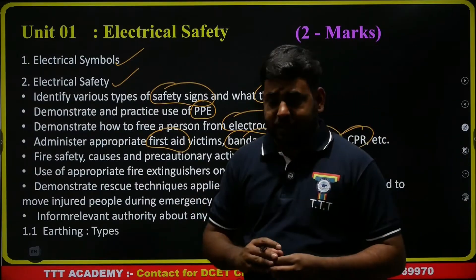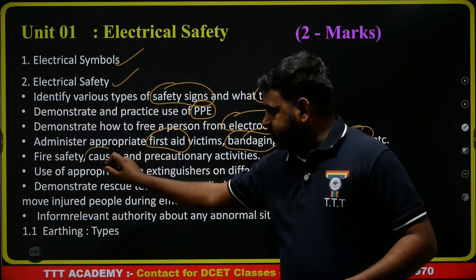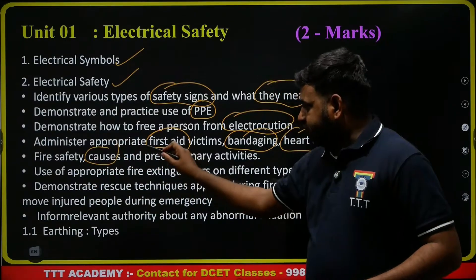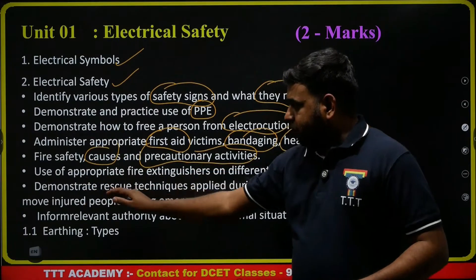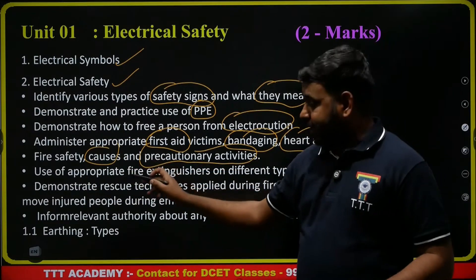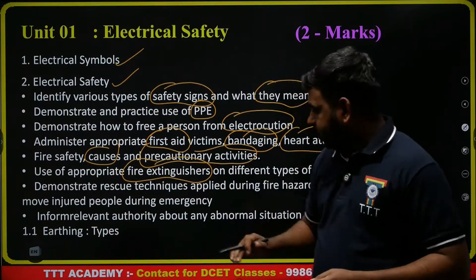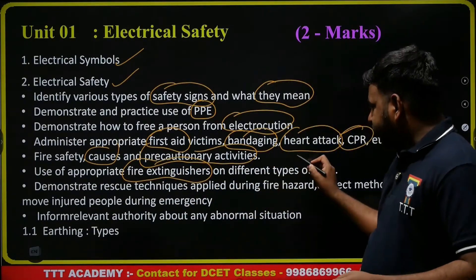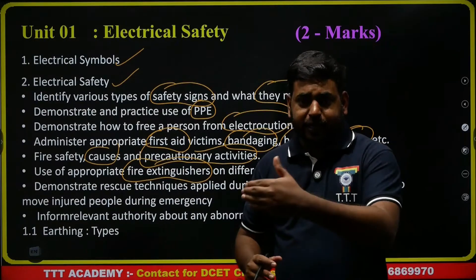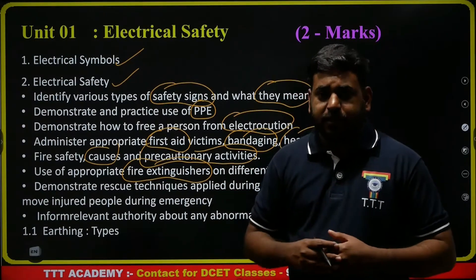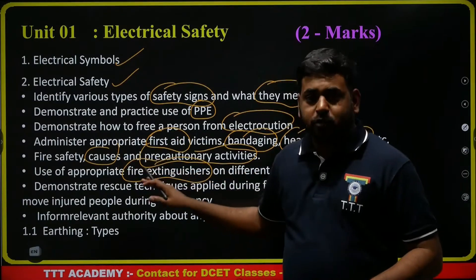What are the causes and precautionary activities of fire? Use of appropriate fire extinguishers. Fire extinguishers control the fire line. On different types of fires — class A, B, C, D, E and other different types — you have to use the appropriate fire extinguisher.